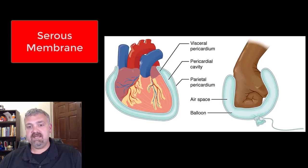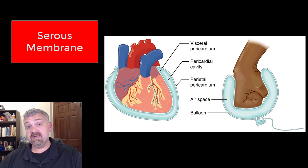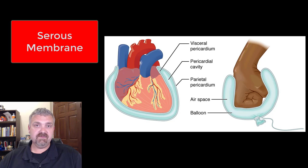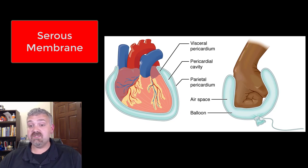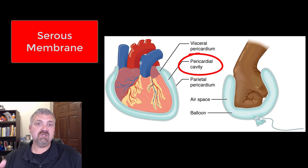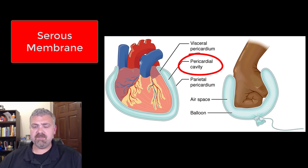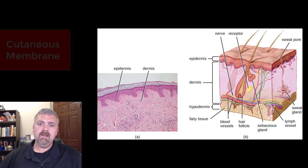Here we see one of your serous membranes. The biggest difference is mucus is a thick sticky secretion, whereas serous membranes are full of serous fluid, which is very watery. Here we see the actual pericardial cavity. I covered the ventral body cavities in a separate video.